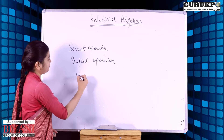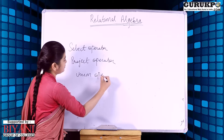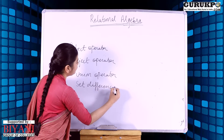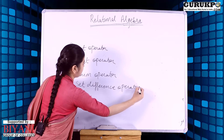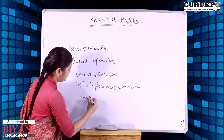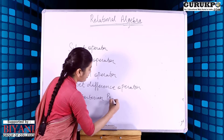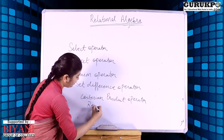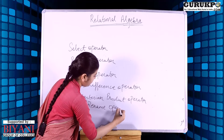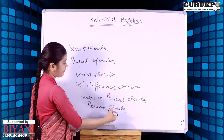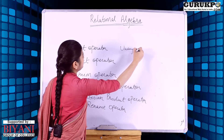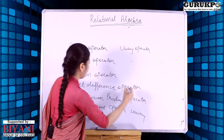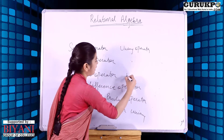The third operator is the union operator. The fourth is the set difference operator. The fifth is the Cartesian product operator, and the last is the rename operator. The select, project, and rename operators are unary operators, while the union, set difference, and Cartesian product operators are binary operators.